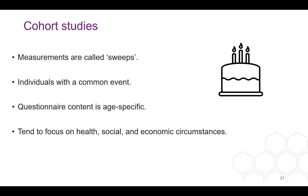Another kind of longitudinal study is the cohort study. Rather than waves, the measurement points for cohort studies are generally called sweeps. These types of studies follow individuals who have a particular event in common, and because they are interviewed at a key point in time they are interviewed less frequently than panel studies. The most common event followed is people born in one week in a particular year, tracked over time — some over their entire lifetime. These are called birth cohort studies and tend to focus on topics regarding health and social and economic circumstances.